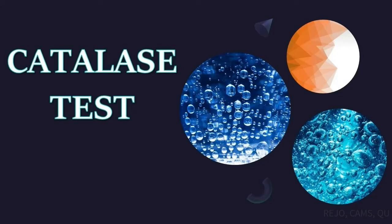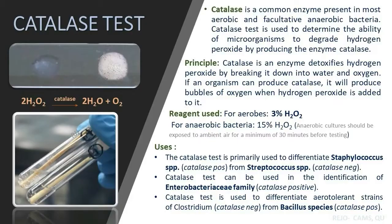In this video we are going to look at how to perform the catalase test. Catalase is a common enzyme present in most aerobic and facultative anaerobic bacteria. The catalase test is used to determine the ability of a microorganism to degrade hydrogen peroxide by producing the enzyme catalase.